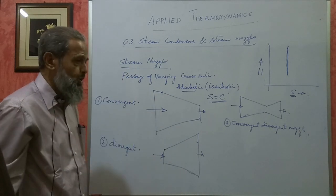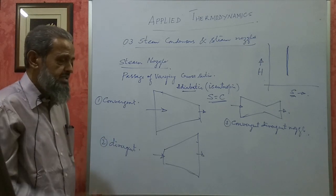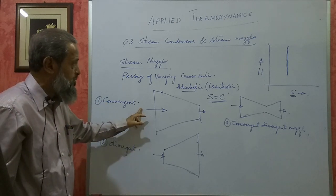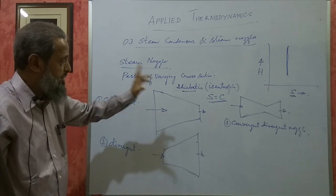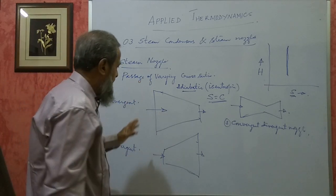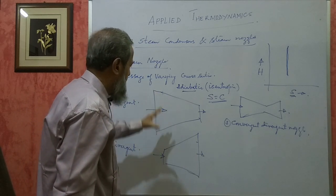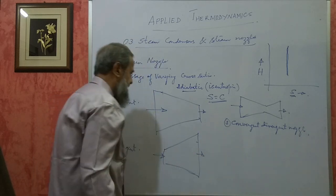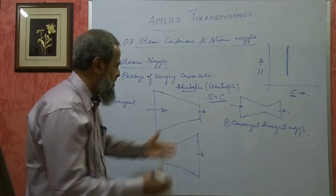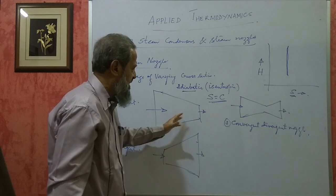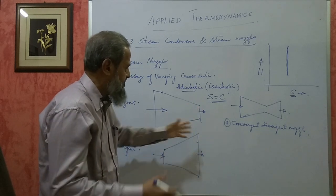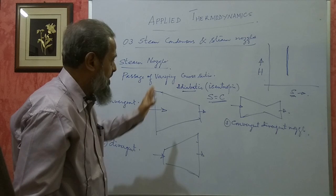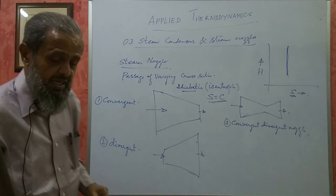Steam nozzles are used in steam turbines and steam injectors. A steam injector is an accessory of a steam boiler where we also use nozzles. In the numericals, one problem will come where we have to find out the exit velocity - that is, with what velocity the steam is discharged from the nozzle - or the area of cross section of the nozzle at exit.